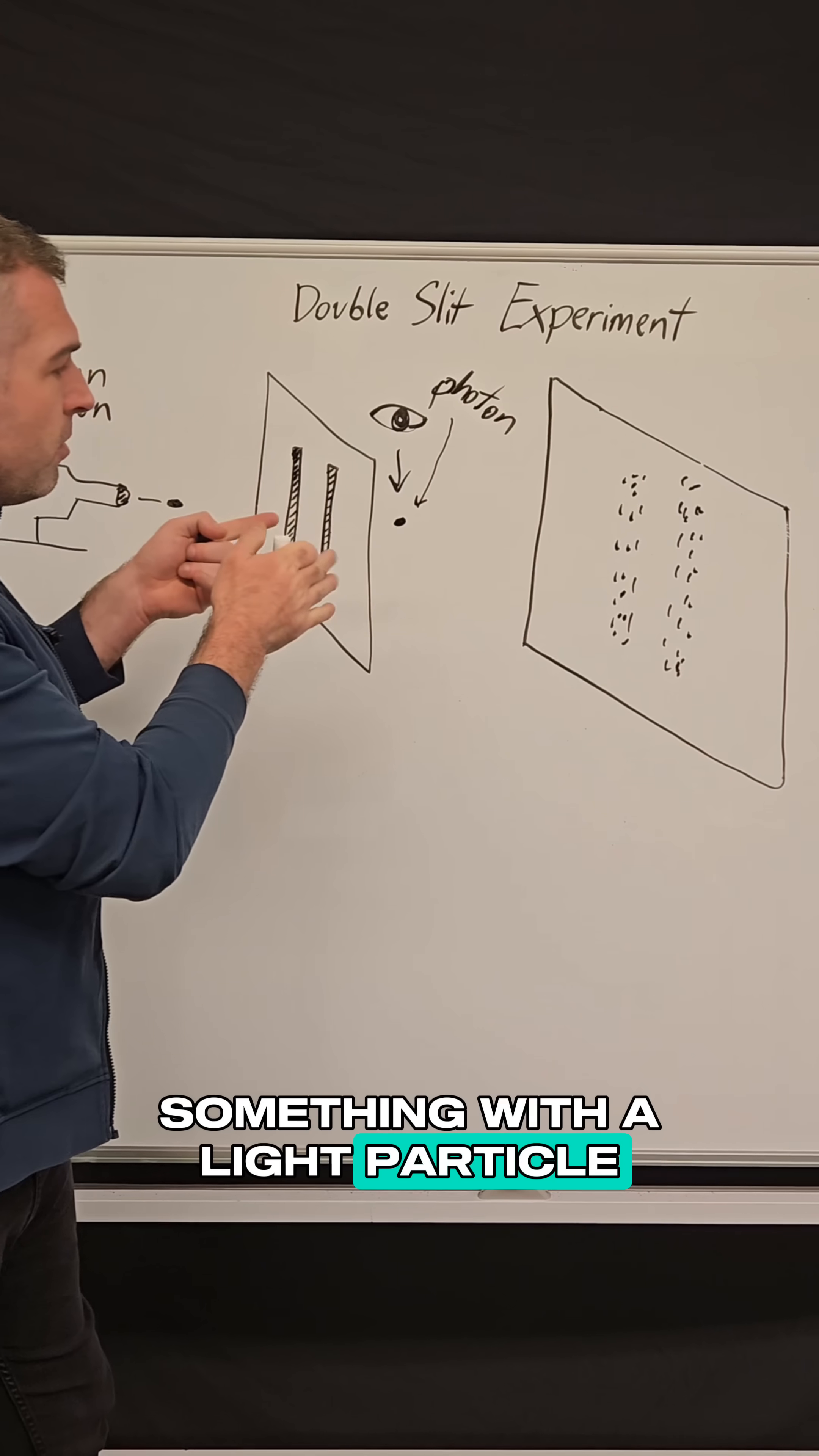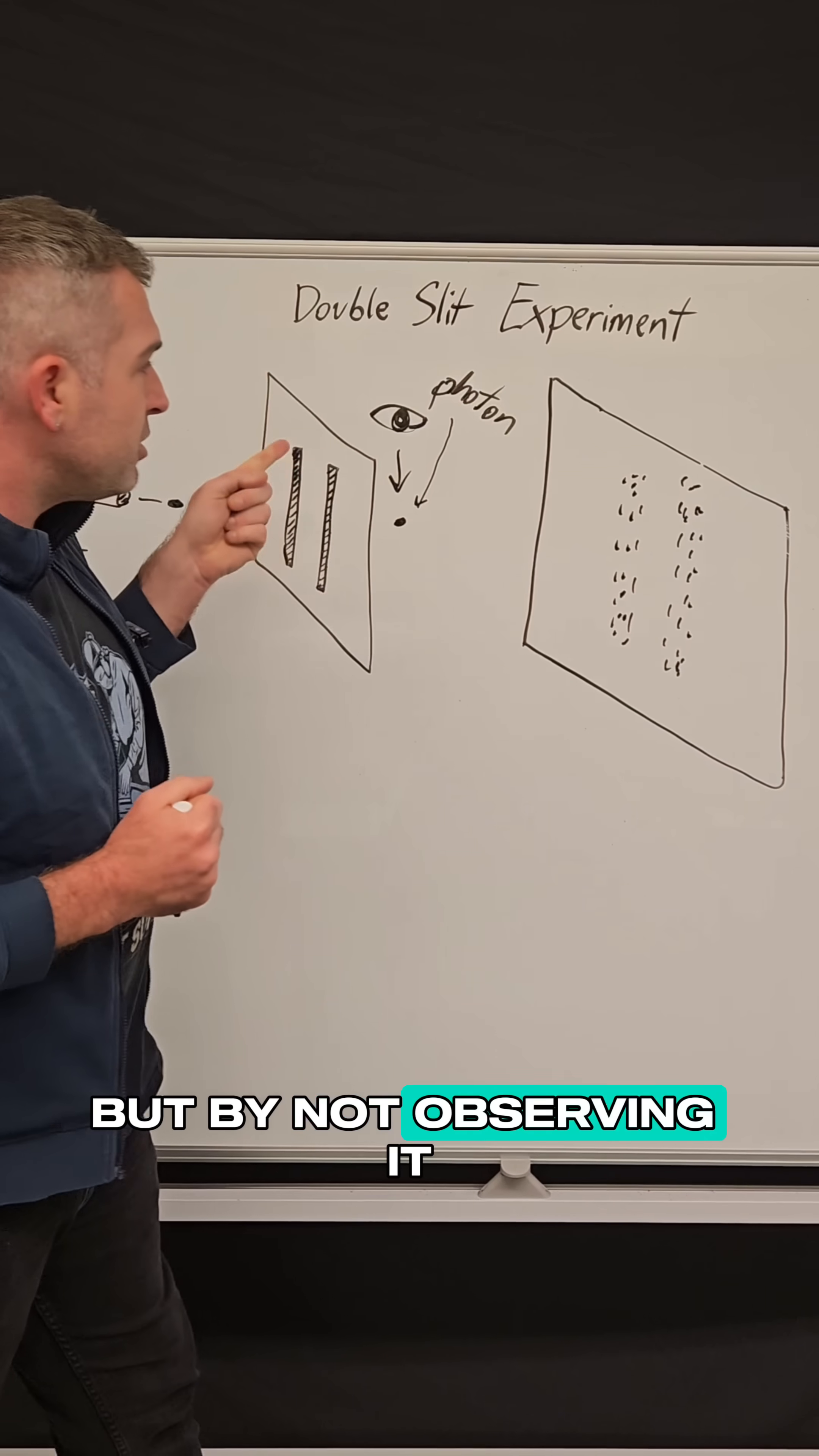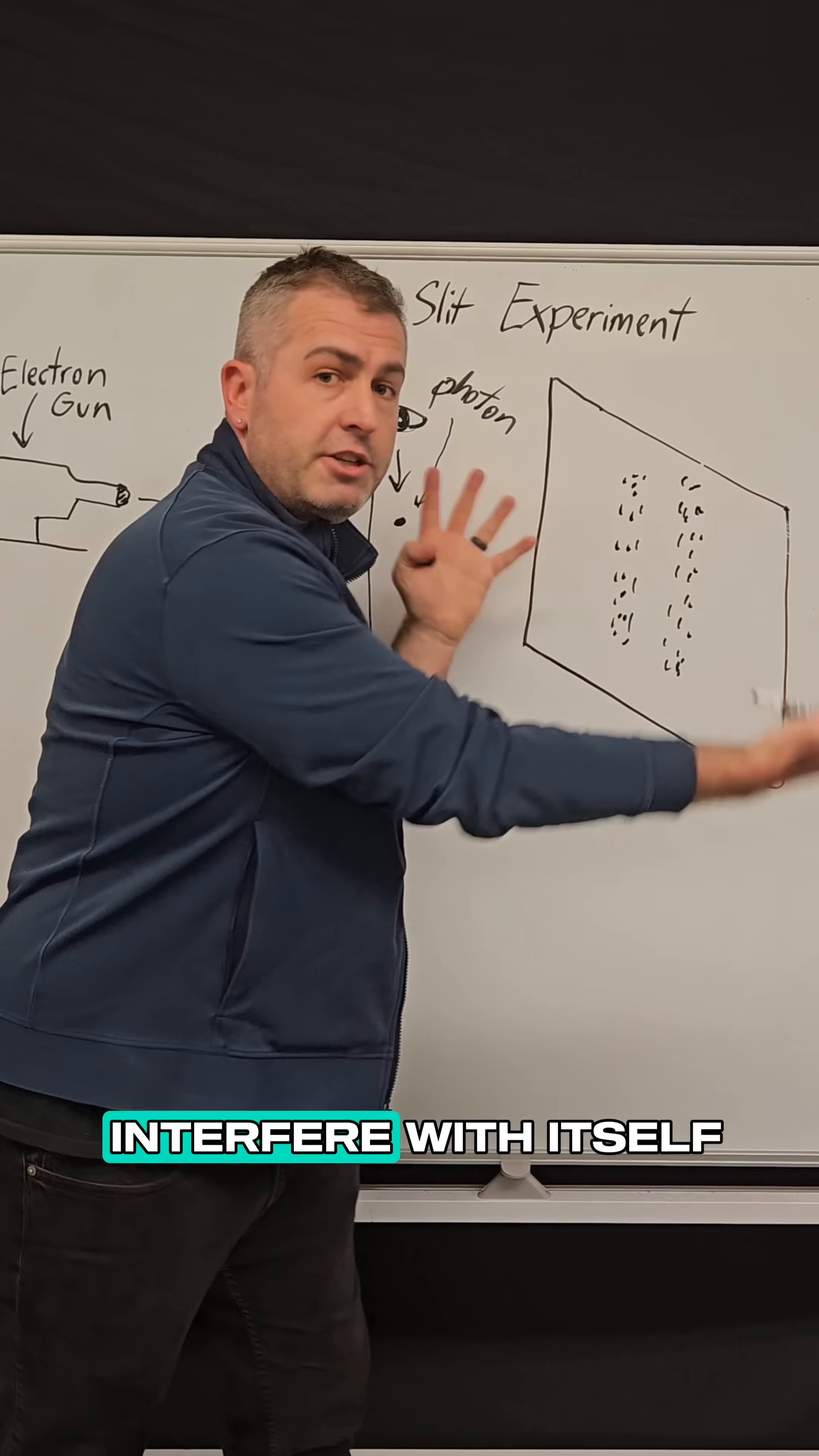And when you hit something with a light particle, you're now collapsing the wave function and forcing that particle to be in one place, which is why it acts like a particle again. But by not observing it, by not hitting it with a photon of light, you're allowing it to act as a wave function, which enables it to interfere with itself.